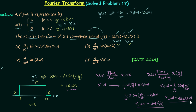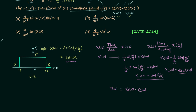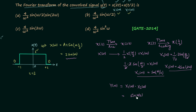We have X1(ω) and X2(ω), so let's multiply them to get Y(ω). Y(ω) = X1(ω)·X2(ω) = sinc(ω/2)·4·sinc(2ω). Writing this out: sin(ω/2)/(ω/2) · 4·sin(2ω)/(2ω). The 2's cancel, giving Y(ω) = 4·sin(ω/2)·sin(2ω)/ω².